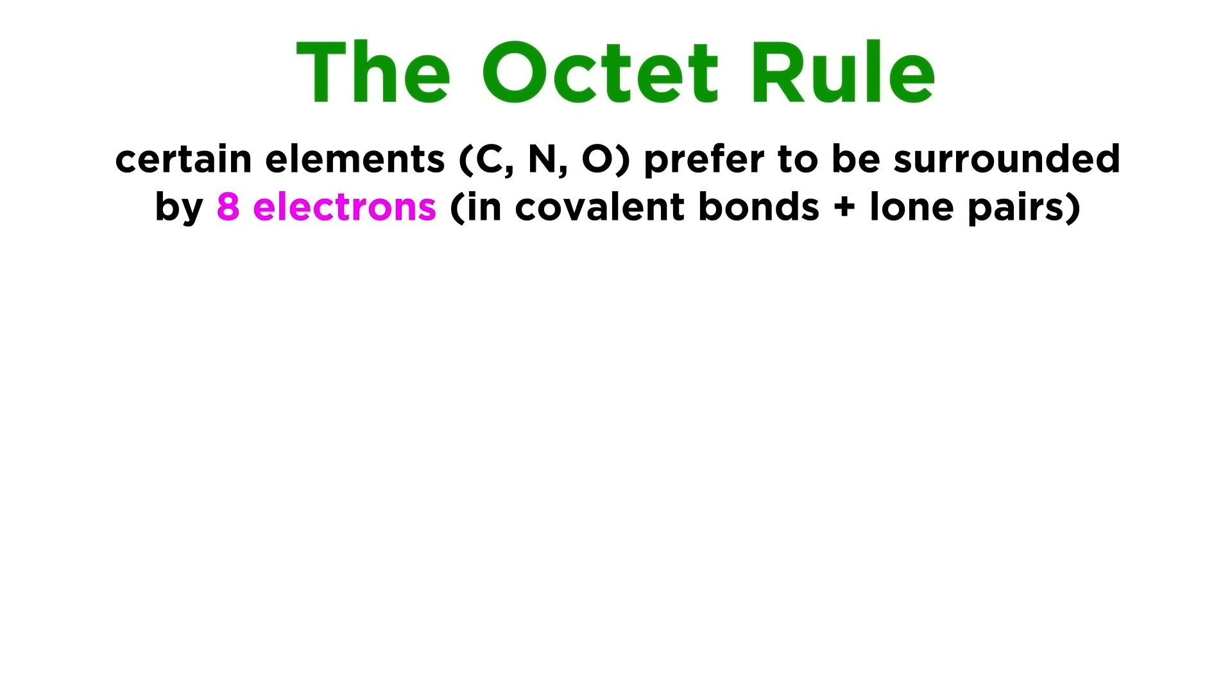The first of these is called the octet rule. This is the rule that states that certain elements, especially some of the most common ones, like carbon, nitrogen, and oxygen, will form bonds in such a way so as to become surrounded by eight electrons, be they from covalent bonds or lone pairs.